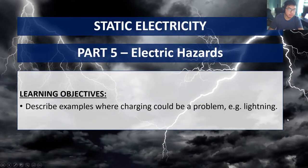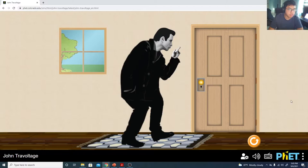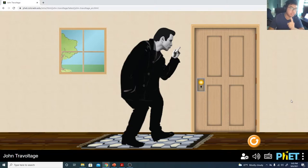For part five, we're going to look at electric hazards and how static electricity can be dangerous. This is the learning objective for this video lesson. Static electricity can be dangerous because of one particular thing: discharge.